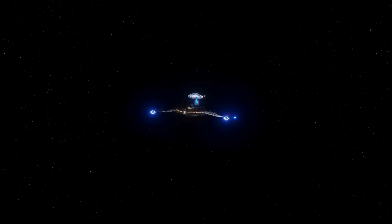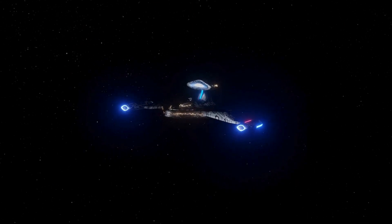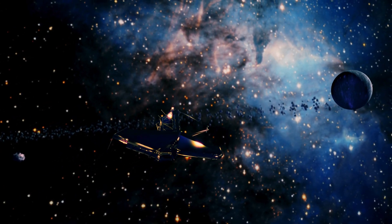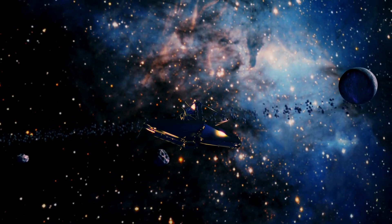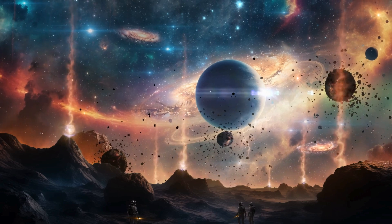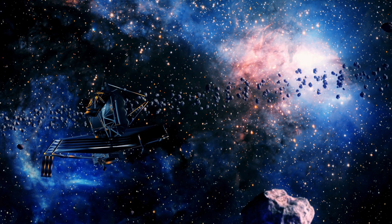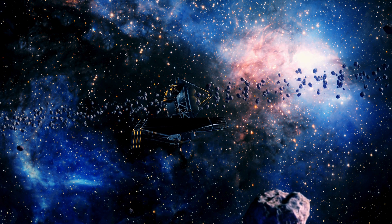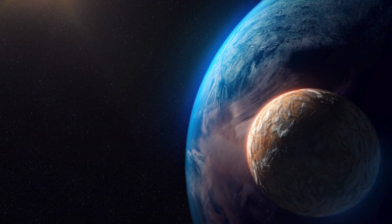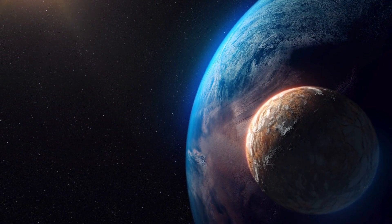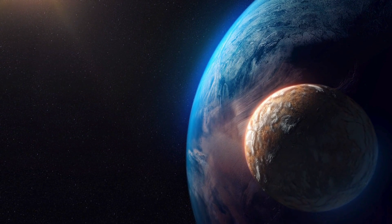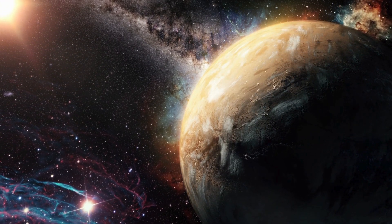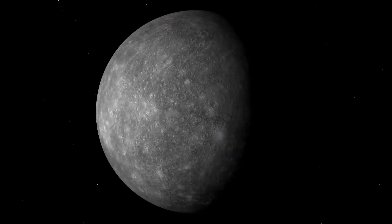Before we dig deeper, let's revisit the history of Planet Nine. First proposed in 2016 by astronomers at Caltech, the Planet Nine hypothesis emerged as a solution to a puzzle. Why do many trans-Neptunian objects have orbits that are clustered in one direction? The idea was that an unseen planet, a massive distant body, was exerting its gravitational influence, shepherding these objects into similar paths.